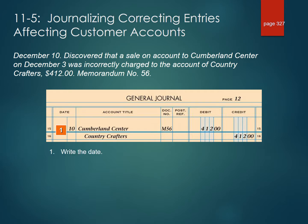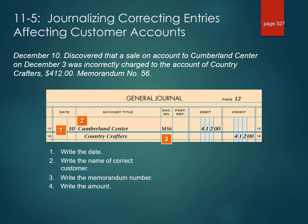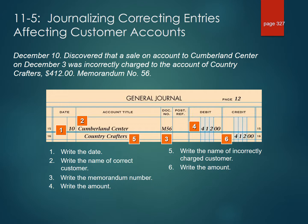Step 1: We will write the date. Step 2: We will write the name of the correct customer, which was Cumberland Center, and record the memo number. Then we will write the debit amount. Step 3: We will then credit the incorrect charge customer and write the amount.